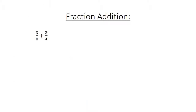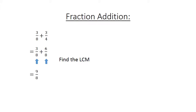Fraction addition: 3 over 8 plus 3 over 4. Find the lowest common multiple: 3 over 8 plus 6 over 8 equals 9 over 8, which equals 1 and 1 over 8.